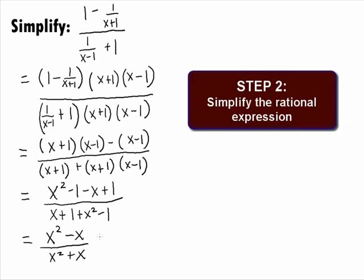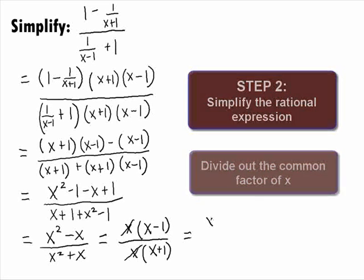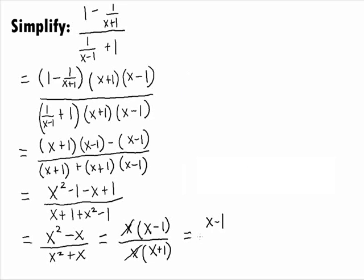In Step 2, we want to simplify the rational expression. It looks like we can factor out a greatest common factor of x in the numerator and get x times x minus 1, and we can also factor out an x in the denominator and get x times x plus 1. We can cancel our common factor of x, and this gives us our final answer of x minus 1 over x plus 1.